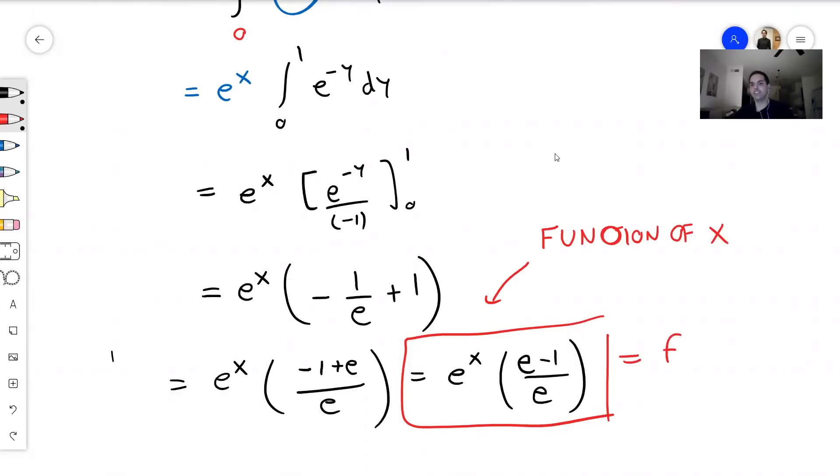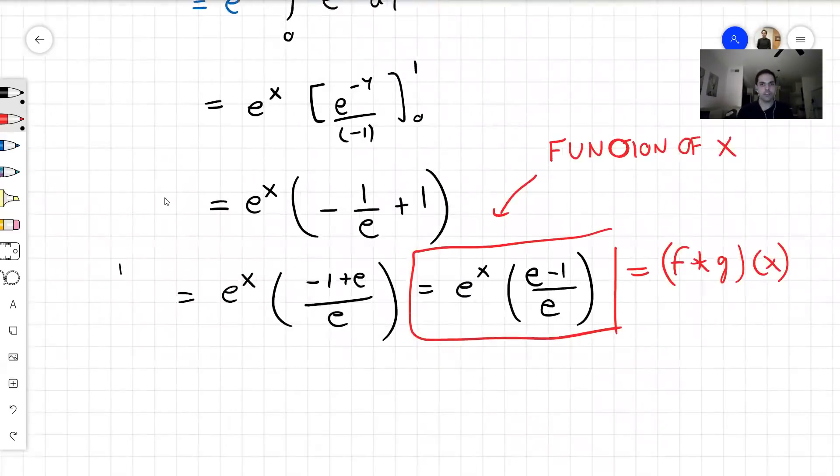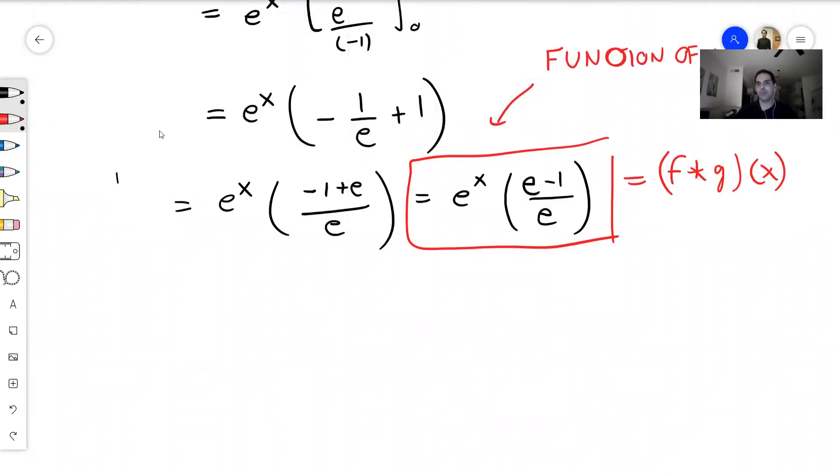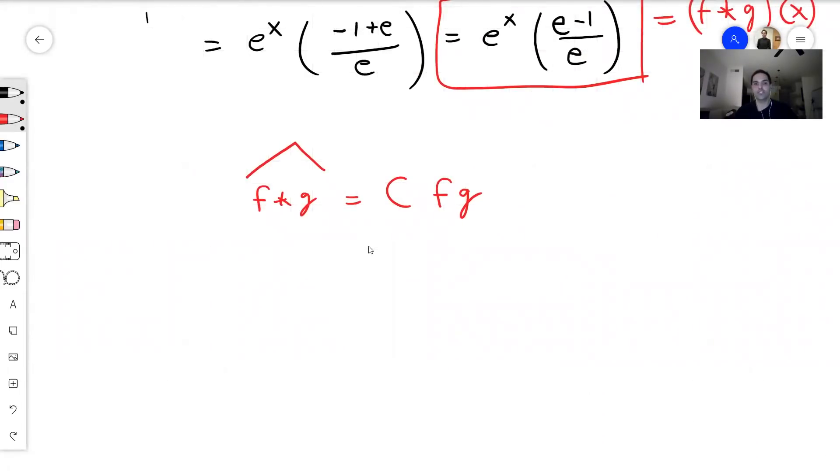So it does make sense to say f star g of x. And again, what this is, it's just a way of multiplying two functions. And this has some very nice properties. In fact, if you're taking Fourier transforms, what's nice is that the Fourier transform of f star g becomes maybe some multiple of f times g. So the Fourier transform turns convolution into multiplication.